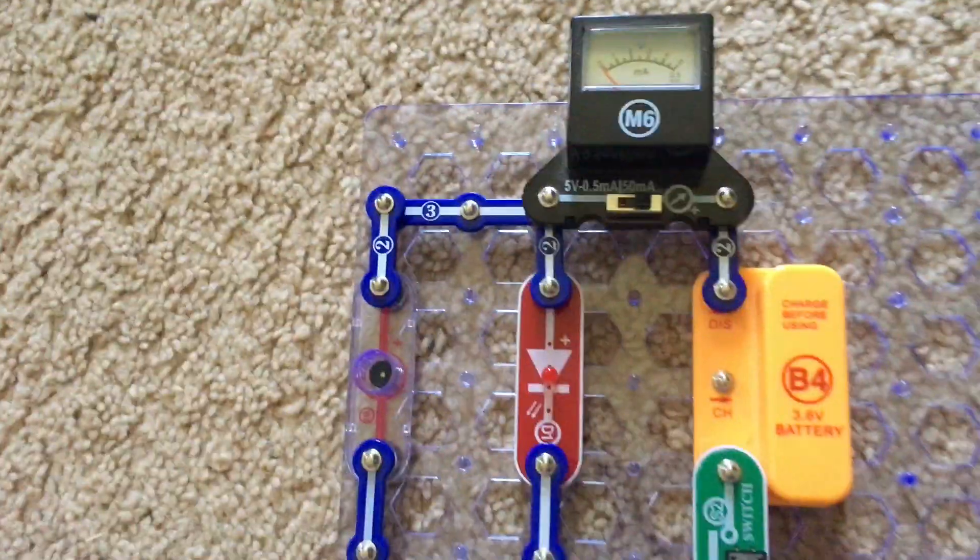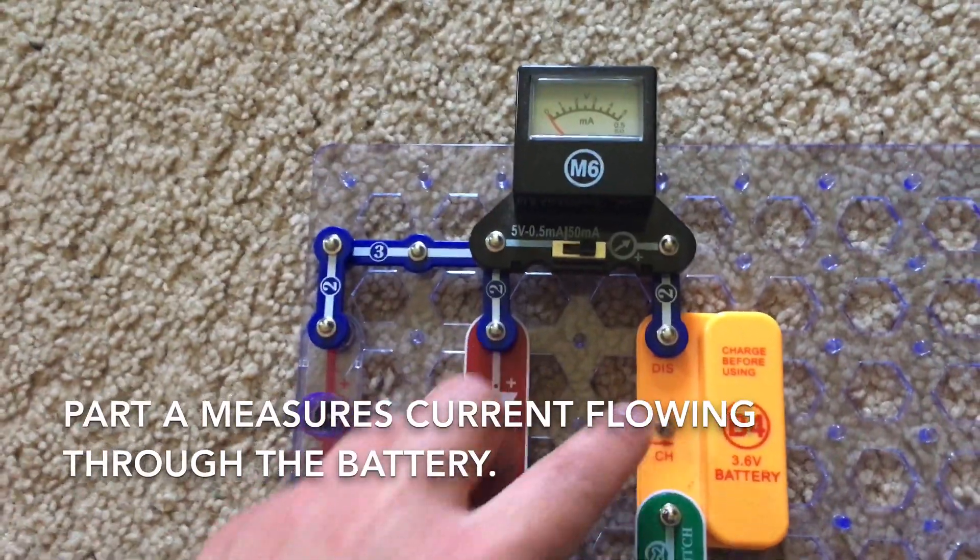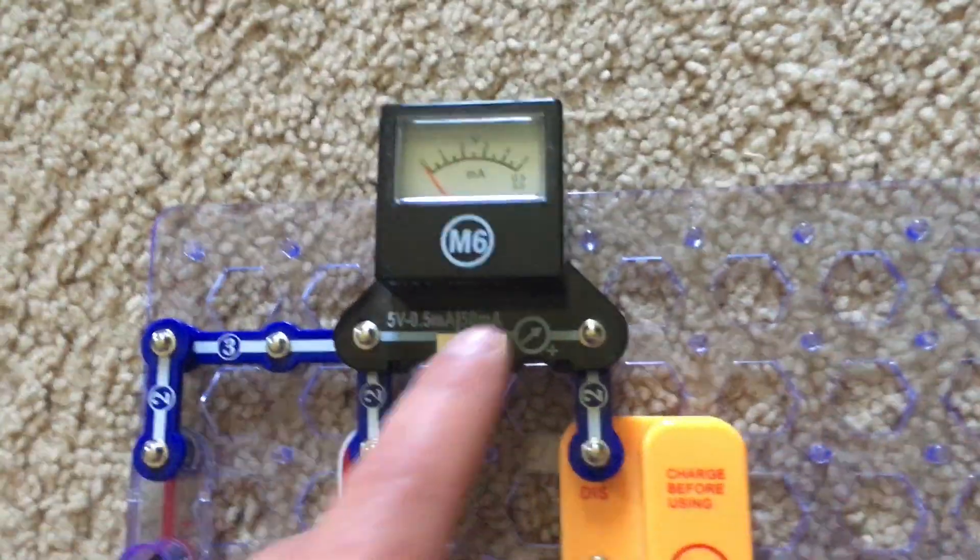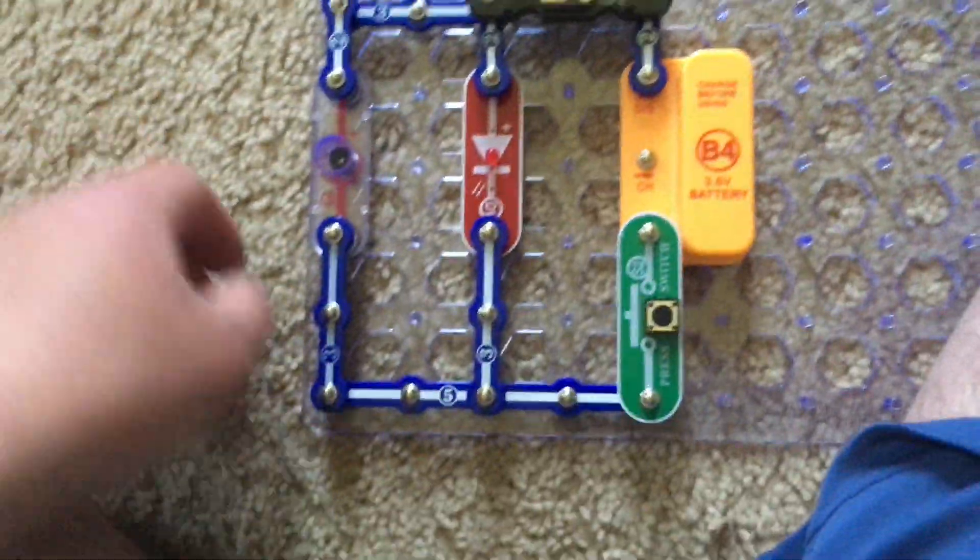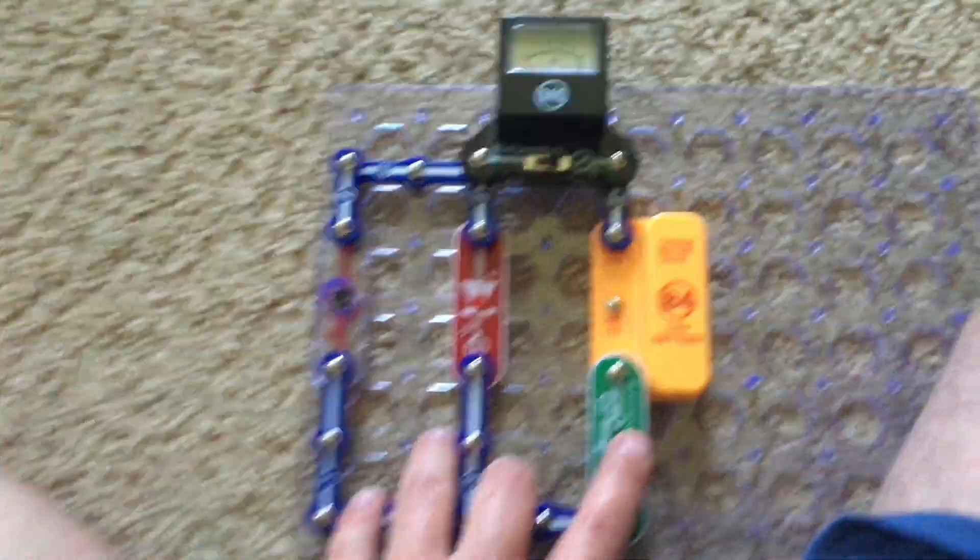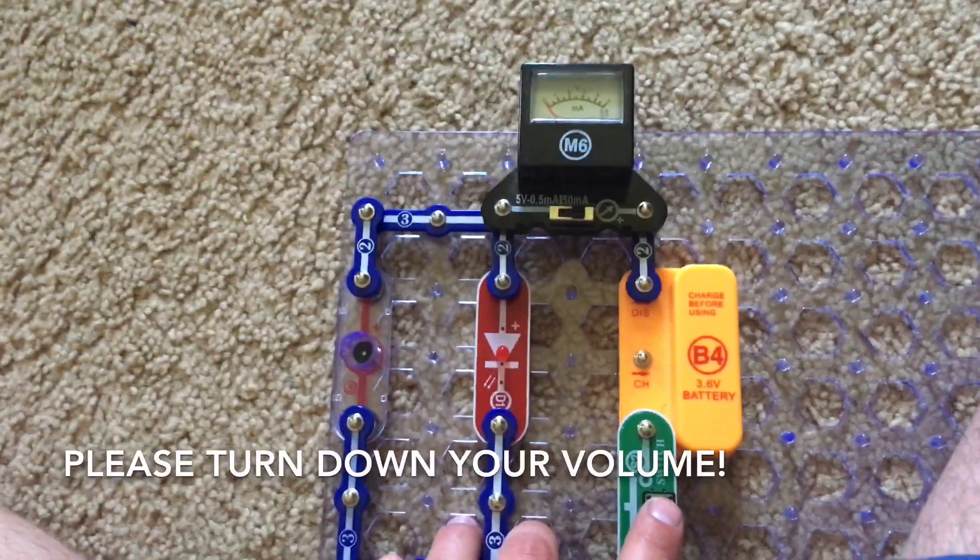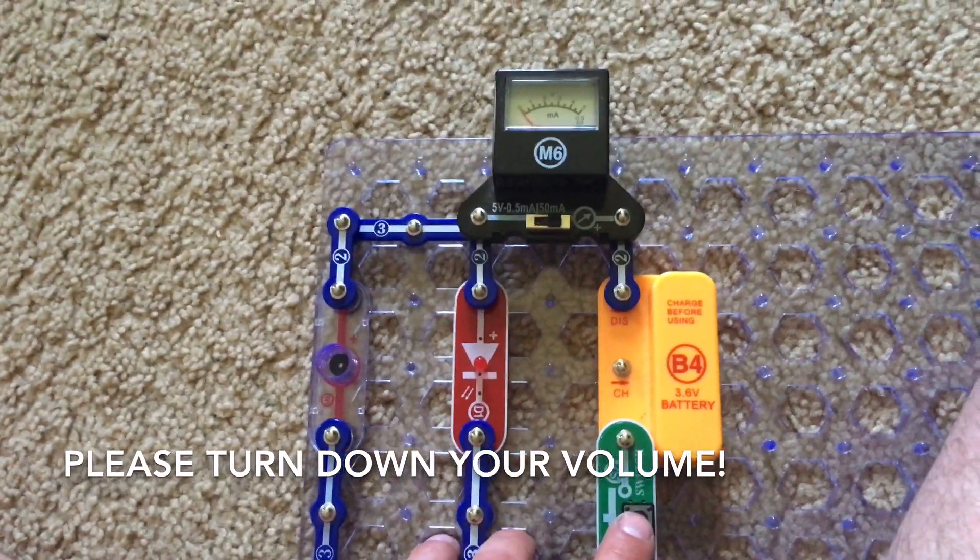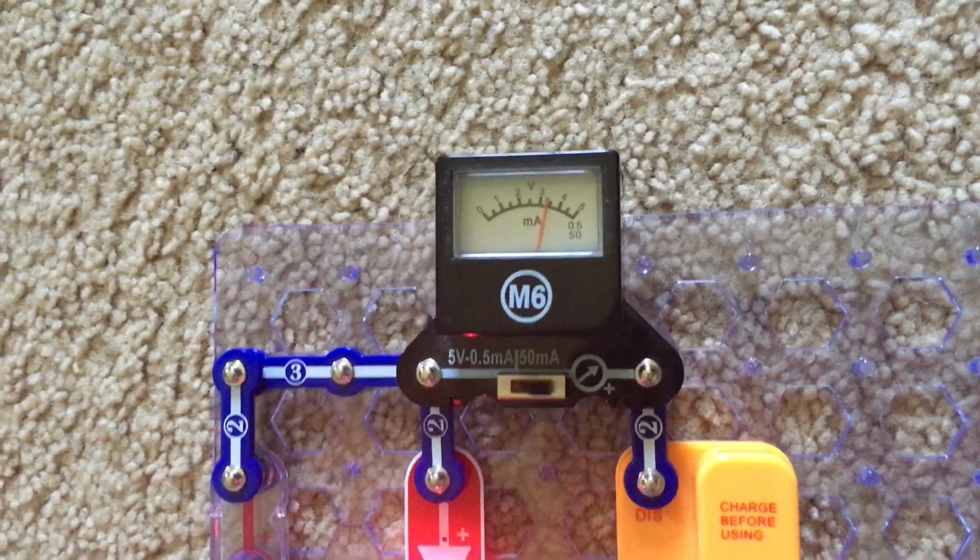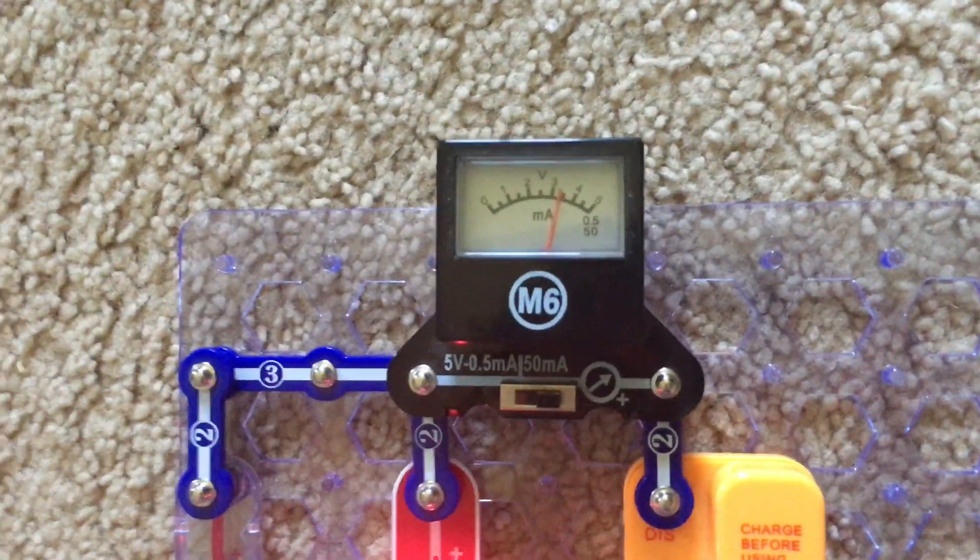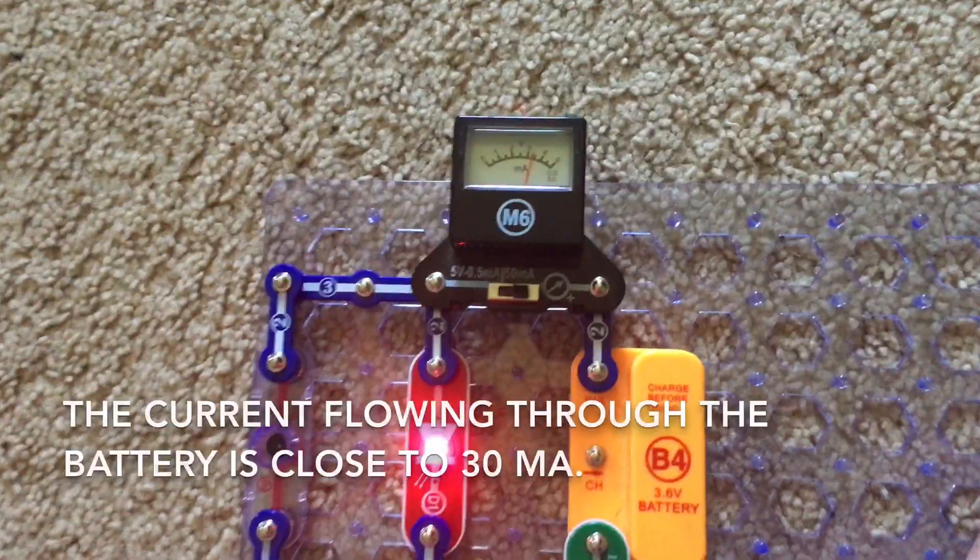The first part will measure the current flowing through the battery. We're going to have the meter set on the 50 milliamp setting and I'm going to hold down the press switch. Please turn down your volume because this may be loud. Here we go. The meter reads close to 35 milliamps.